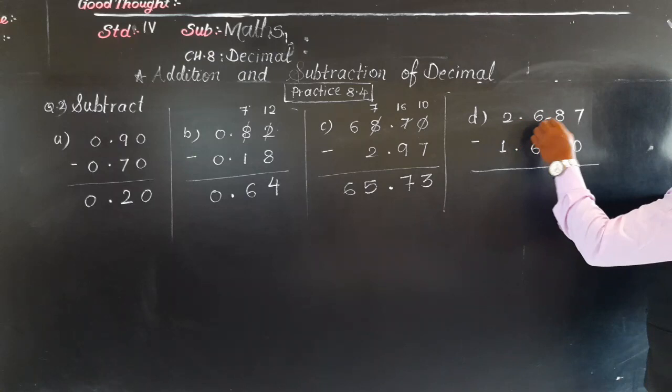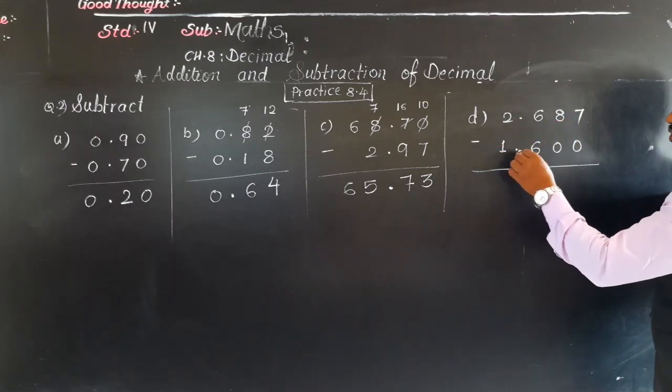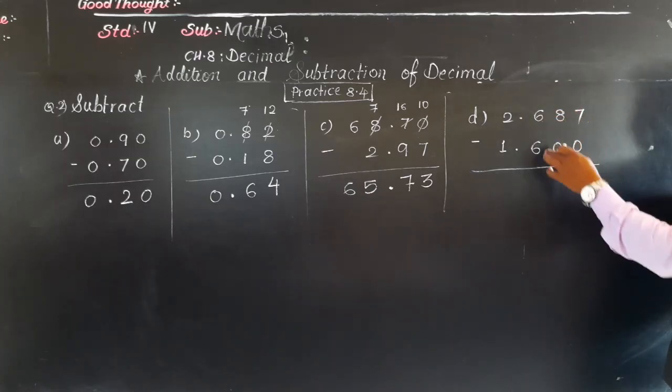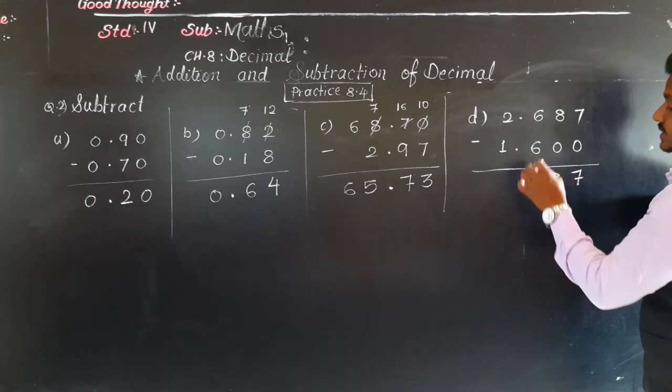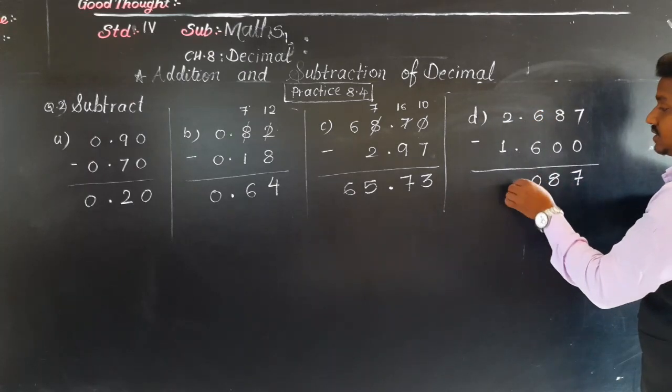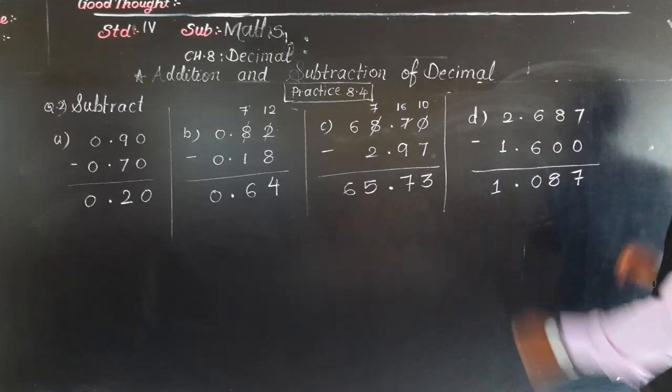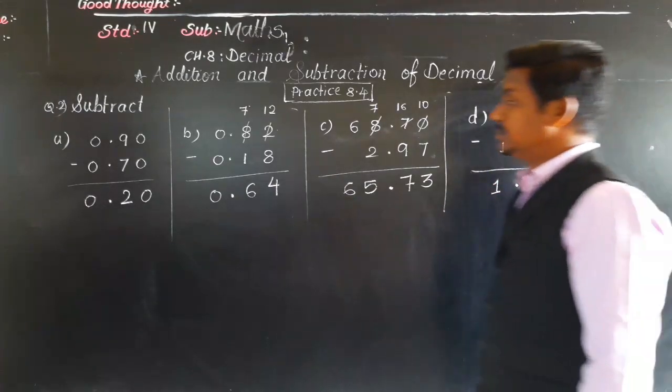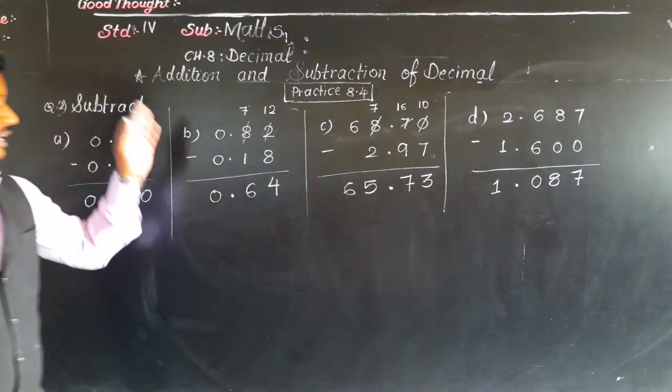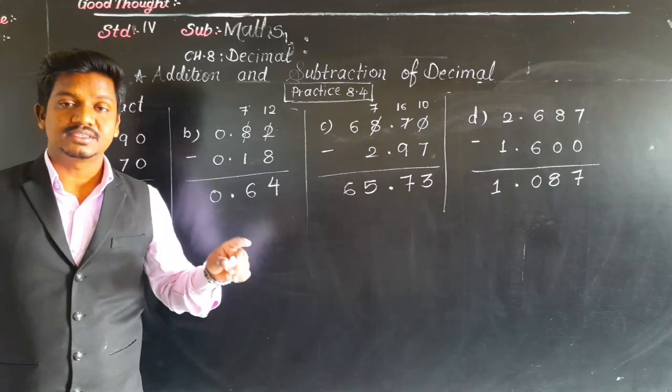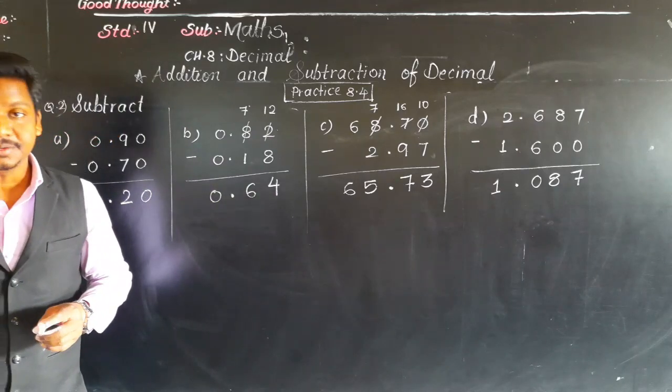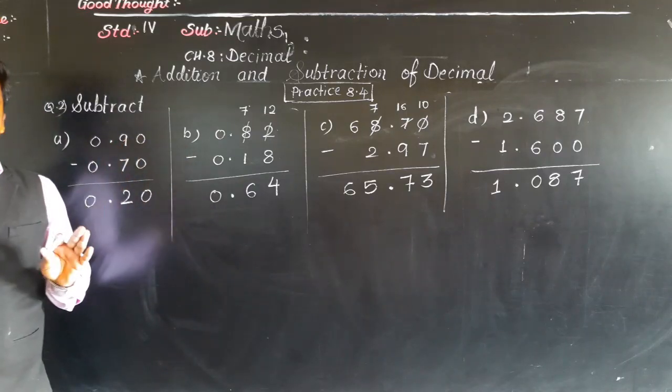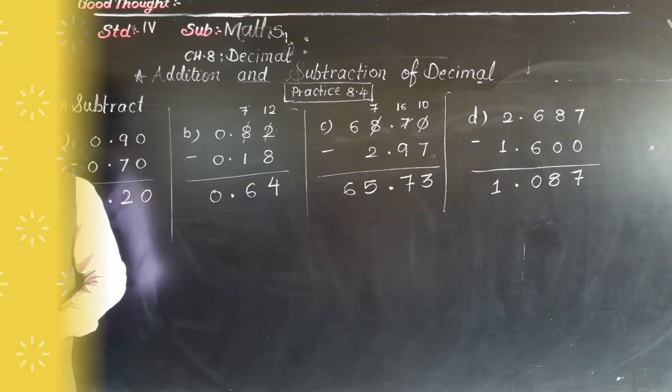Next: 2.687 minus 1.600. 7 minus 0 is 7. 8 minus 0 is 8. 6 minus 6 is 0. That was quite easy. 2 minus 1 is 1. Understand? In this way we have to do the subtraction of decimals. Understand? In both the questions, addition and subtraction, two more examples are there that you have to solve or try by yourself. So now pause this video, write this and solve the examples which are there for homework. Thank you for today and have a nice day.